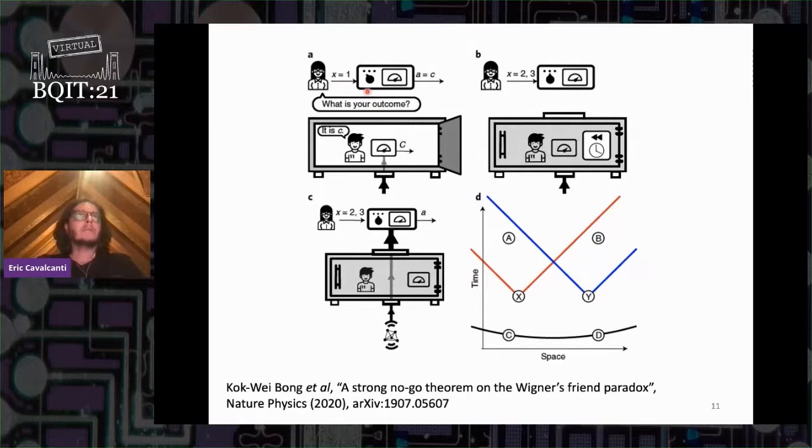If Alice chooses x equals one, she will simply open the lab and ask Charlie what he observed and set her own outcome A to be equal to that of Charlie. If she chooses another setting, she will perform another measurement which can be implemented by reversing the unitary evolution that entangled Charlie with the system, erasing Charlie's memory in the process, and then measuring the system alone.